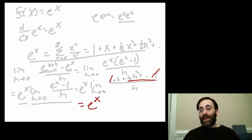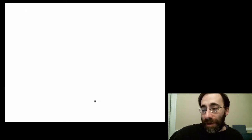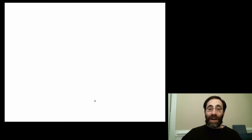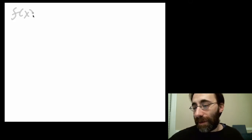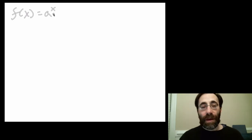So we see that the derivative of e to the x is just e to the x — the nicest derivative possible. Now, what if we want to be a little more general? It's fine that the derivative of e to the x is e to the x, but what about the derivative of something like a to the x, where a is some constant? Let's try that.